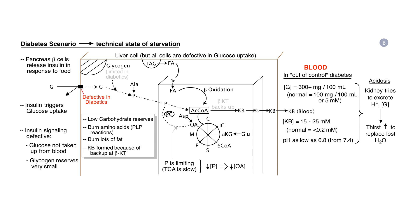Now let's look at Panel B of Storyboard 24, examining the physiological scenario of diabetes. In type 2 diabetes, cells become resistant to taking up glucose — they are insulin insensitive. After a meal, glucose concentrations in the blood are very high because the cells of the tissues cannot take it in. If anti-diabetic medication is not taken, blood sugar stays high, leading to medical complications. Although glucose is abundant in the blood, it's not getting into cells, so cells are in a technical state of starvation. Broken lines in the pathway from glucose to pyruvate indicate those pathways are not very active.